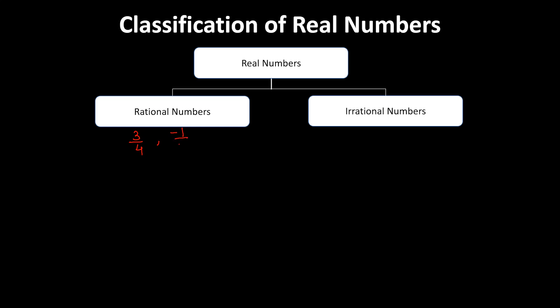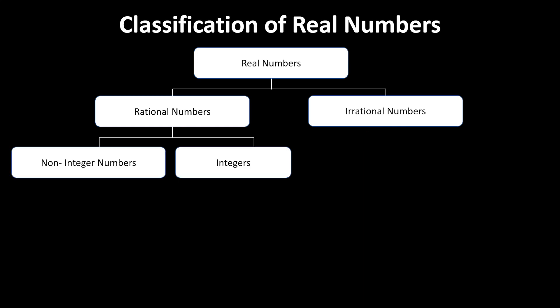Examples of rational numbers include minus 1/2, 7/3, and so on. Irrational numbers are numbers which cannot be written in the form of p/q where the denominator is not equal to 0. For example, the square root of all prime numbers — root 2, root 3, root 5 — are irrational numbers. Pi is also an irrational number.